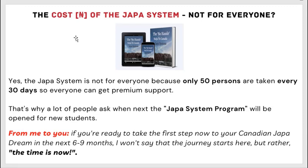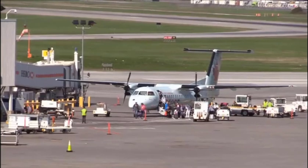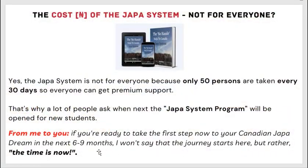So what is the cost of the Japa System? Before we see the cost, I want to disclose that this program is not for everyone — only 50 persons are taken every 30 days so that everyone can get the premium support I've talked about. So only 50 persons are enrolled into the Japa System program so that you can get every support you need. If you are ready to take the first step now to your Canadian Japa dream in the next six to nine months, the time is now.